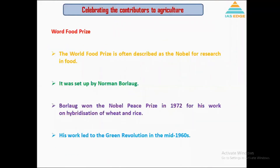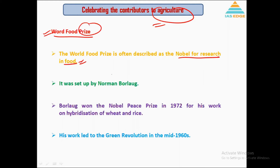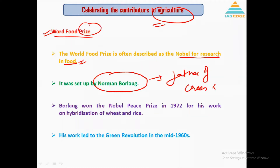Next topic: celebrating contributors to Indian agriculture. There is an award called the World Food Prize, described as the Nobel Prize for research in food. It was set up by Norman Borlaug, also called the Father of the Green Revolution, who won the Nobel Prize in 1972 for his work in hybridization of wheat and rice. Norman Borlaug invented hybrid seeds, which were very effective and increased crop yields by 3–4 times.